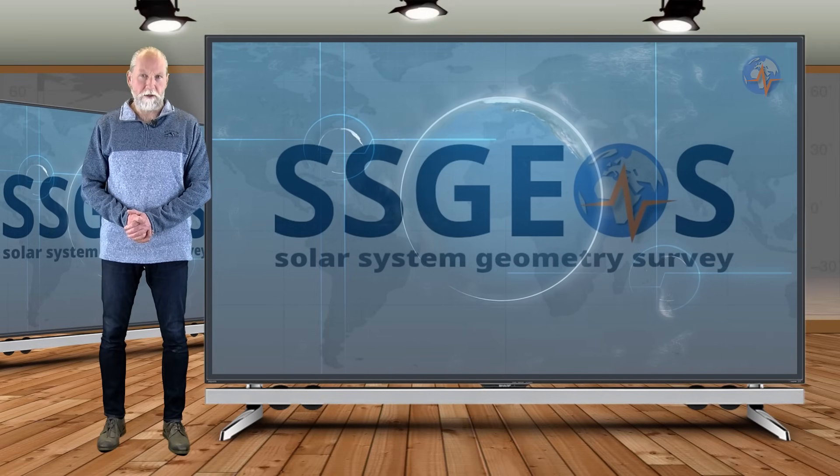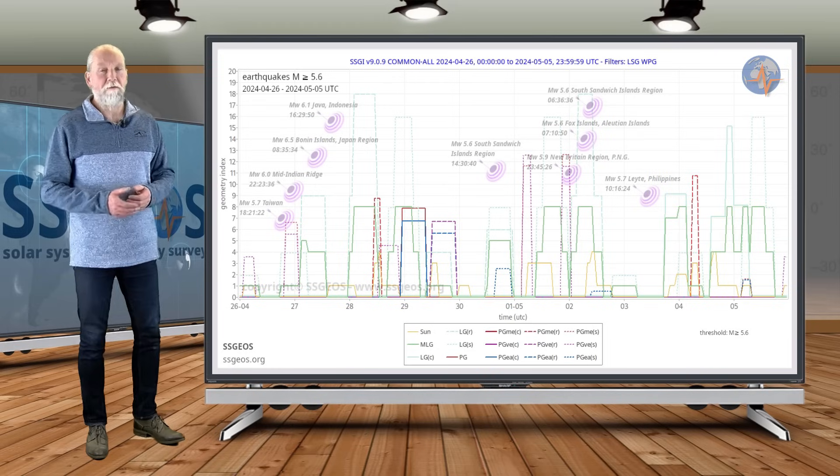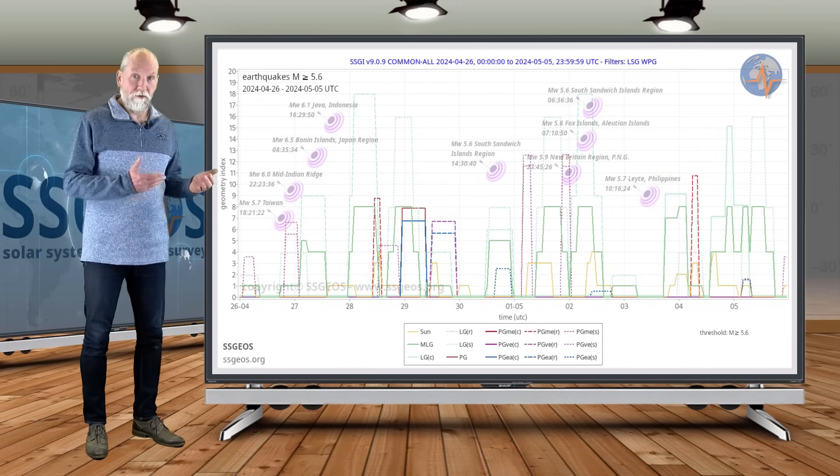Welcome to a new Planetarium Seismic Update. As usual, we start with the SEGI graph with seismic activity 5.6 and larger as it occurred in the forecast timeframe from 26 April.